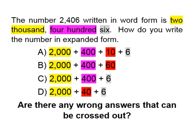Let's look at C. We have two thousand — highlighted in yellow. Four hundred — highlighted in pink. And six — highlighted in gray. So C is possibly a correct answer. Let's look at D. D does have two thousand highlighted in yellow, but it has forty, and in our number we have four hundred, not forty. So we'll highlight forty in red because that's incorrect. And yes, we have six so we'll highlight that in gray.